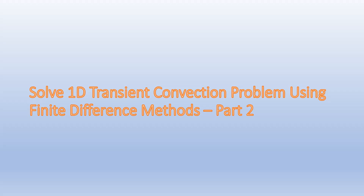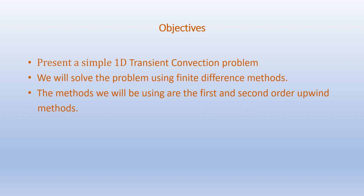Hello everyone, we are continuing from Part 1 of this presentation on how to solve a 1D transient convection problem using finite difference methods. In Part 1, we solved the same problem using analytical methods and some finite difference methods. In this part, we are going to solve the same problem using different finite difference methods — specifically, the first and second order upwind methods.